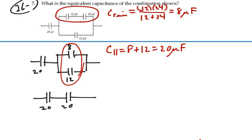Now we have a series combination. And that will be our equivalent resistance. Product over the sum. 20 times 20 over 20 plus 20. That will give us 400 over 40 or 10 microfarads.